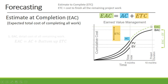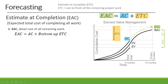First, we can calculate our Estimate at Completion if we know all the detailed costs of the remaining work on our project. That is our Actual Cost plus the bottom-up Estimate to Complete — meaning we add up the costs of all the individual activities that are remaining on our project.